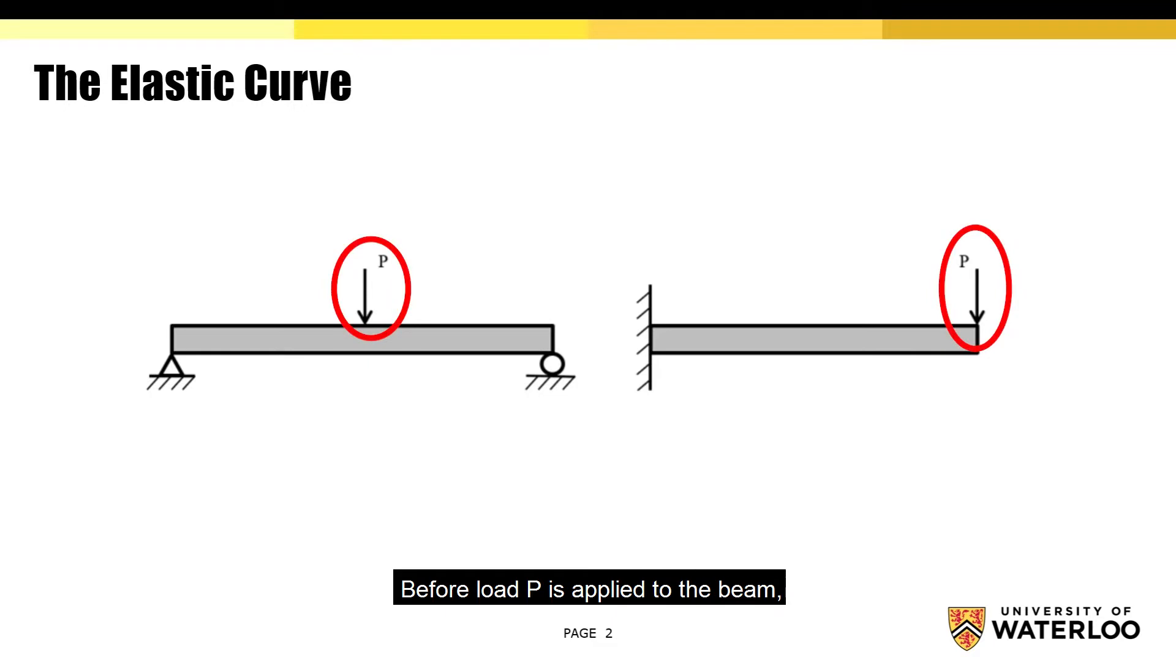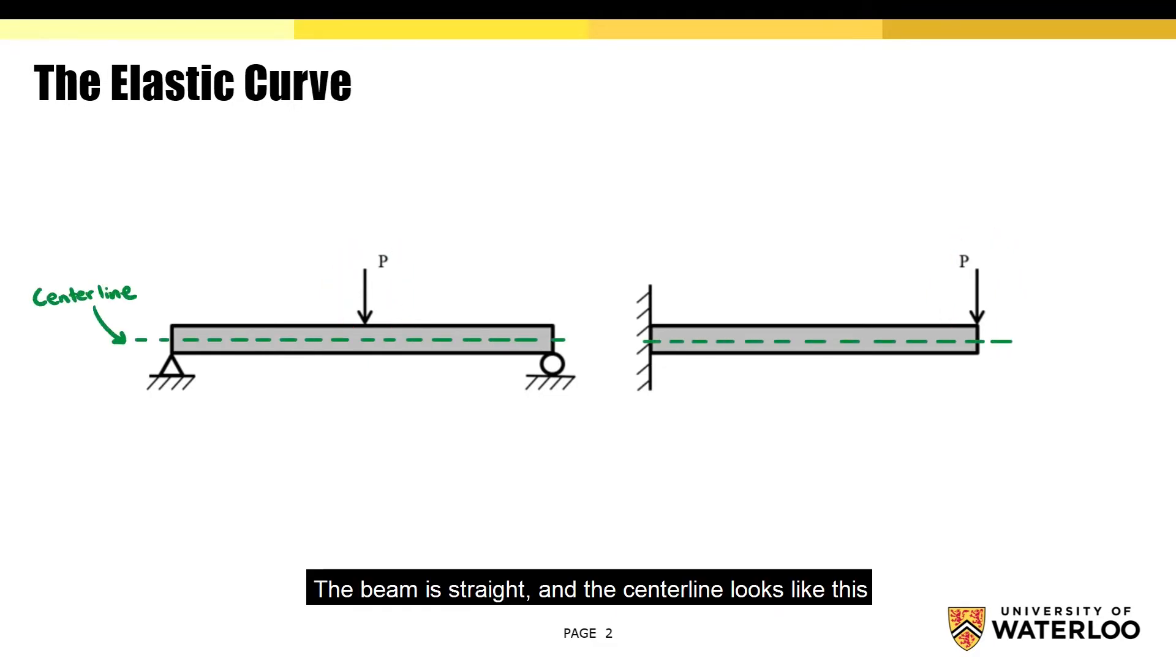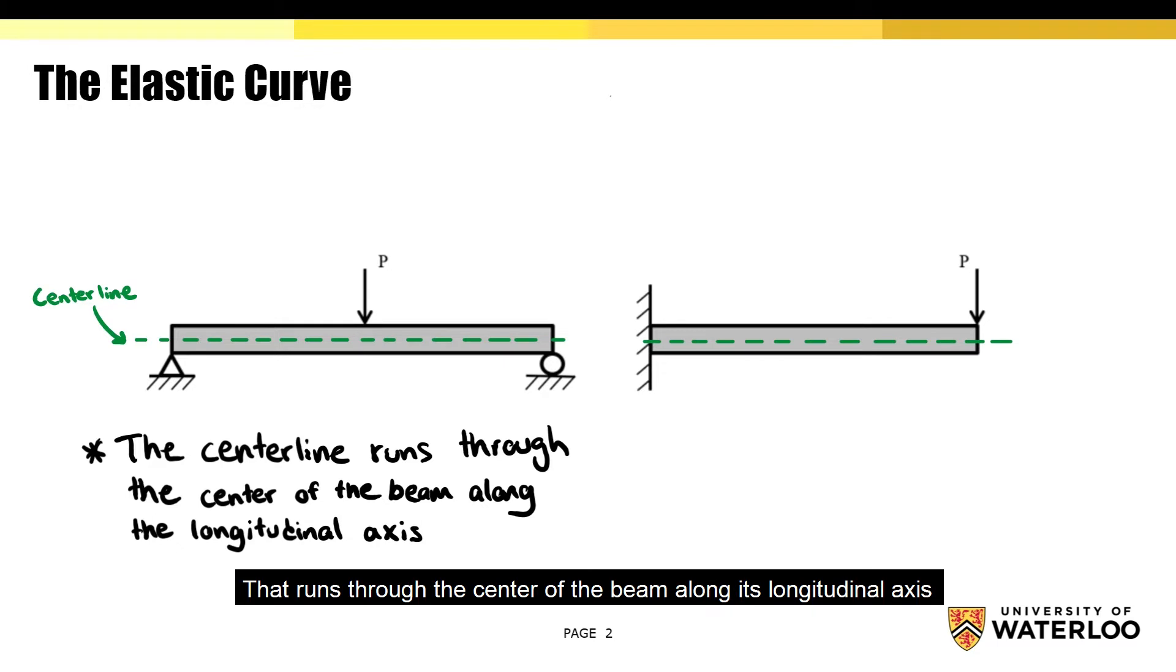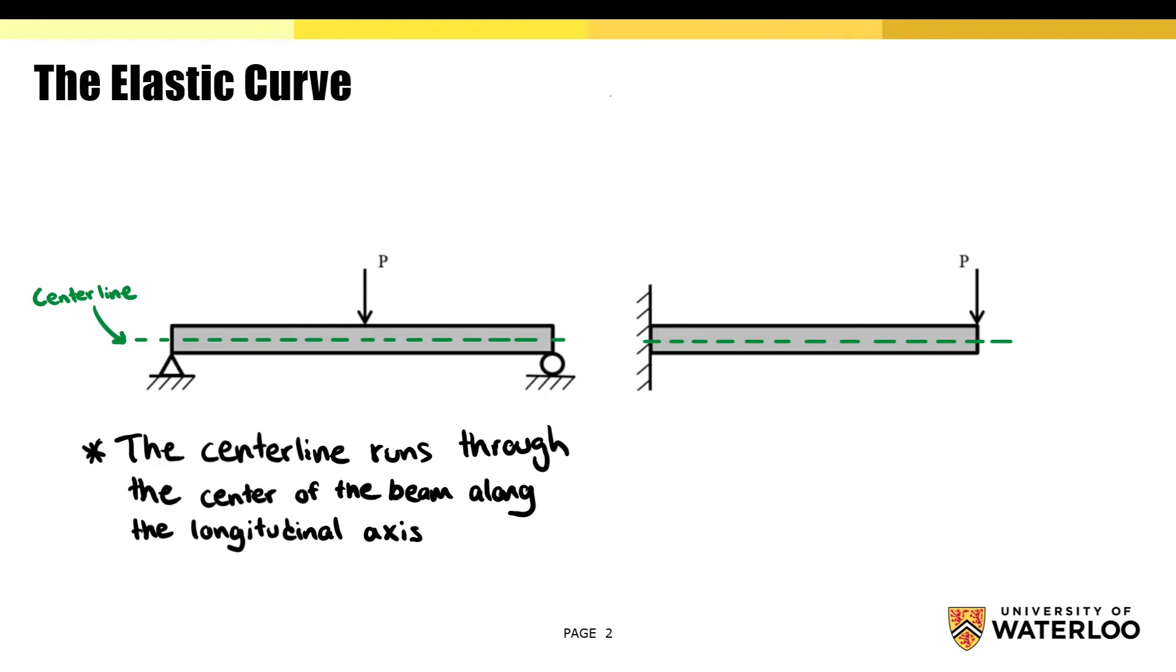Before load P is applied to the beam, the beam is straight and the center line looks like this. In case you don't already know, the center line is simply an imaginary line that runs through the center of the beam along its longitudinal axis.